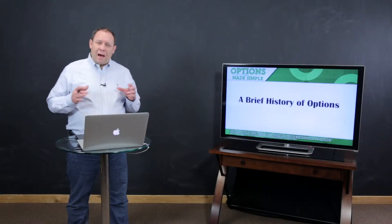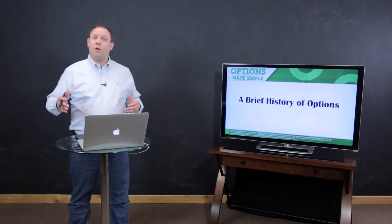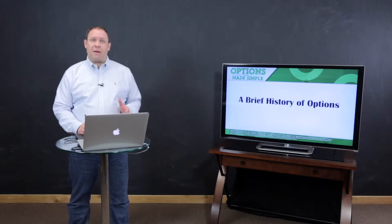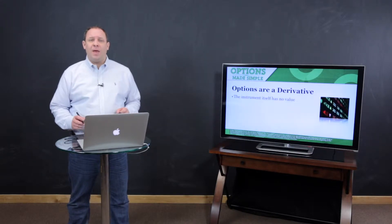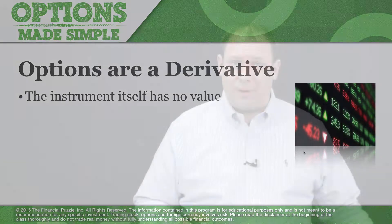As we start looking at options trading, it's really valuable to take a look at where options trading came from. We're going to do a quick history of options right now. The first thing you need to know is that options are a derivative. The instrument itself does not have value — all of the value comes from another instrument.